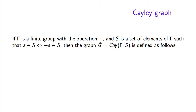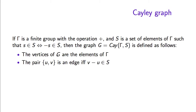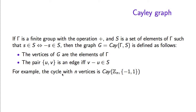Suppose we have some finite group and we use plus to denote the group operation. Suppose we have some set of elements of the group with the symmetric property that an element s is in S if and only if the negative of the element is also in S. Then we define the Cayley graph of the group gamma with the set S as the graph where the vertices are elements of the group and the edges are pairs of vertices whose difference according to the group operation is in S. For example, the cycle is the Cayley graph of the group of integers from 0 to n-1 with addition mod n and with S being just plus 1 and minus 1.